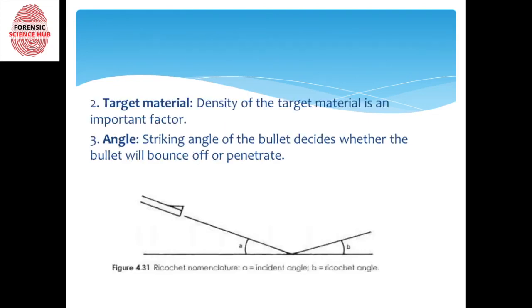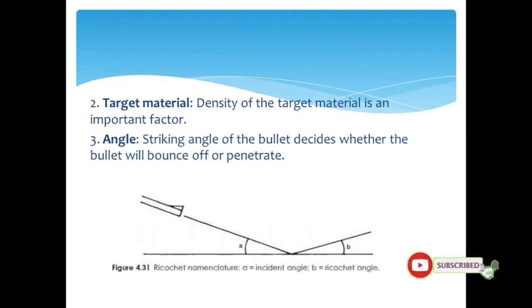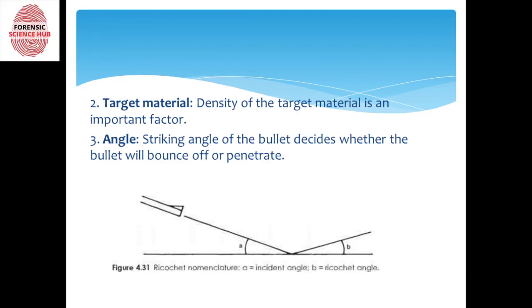Next factor is target material. The density of the target material is important. If the density of the target material is less, then there are more chances that the bullet will be able to penetrate inside. If the density is more, then there are more chances that the bullet will not be able to penetrate and will bounce off, showing ricochet.